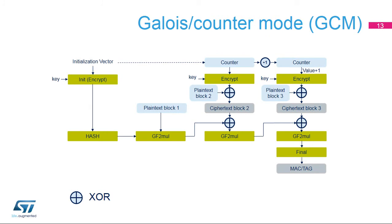In Galois Counter Mode, or GCM, the plain text message is encrypted while a message authentication code is computed in parallel, thus generating the corresponding ciphertext and its MAC, also known as an authentication tag. It is based on AES counter mode for confidentiality, and uses a multiplier over a fixed finite field for generating the tag. It requires an initialisation vector at the beginning. Part of the GCM message might not be encrypted — this block is called the authenticated header.